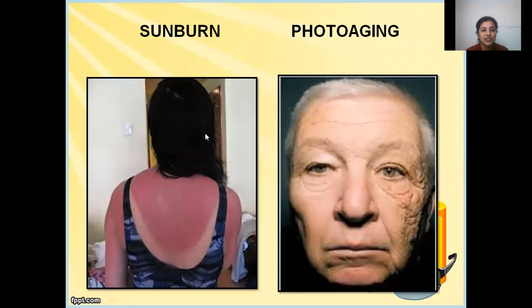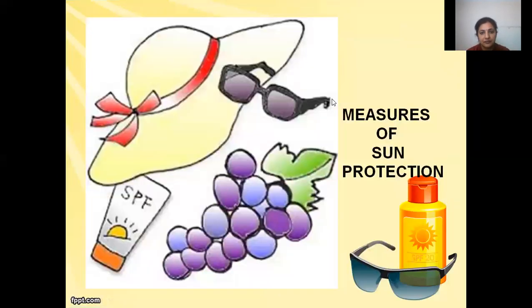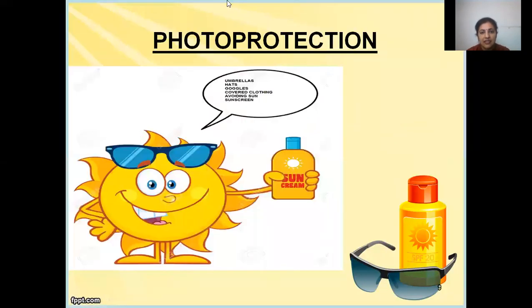These are some pictures showing sunburn and photoaging. Measures of sun protection are many — such as the use of umbrellas, hats, goggles, covered clothing, avoiding the sun — and the foremost protective agents called sunscreens.